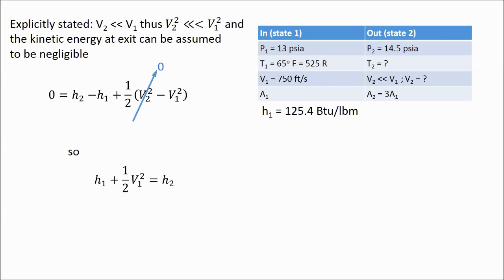That's because if v2 is less than v1, then v2 squared is definitely less than v1 squared. So our final energy balance equation ends up being that the enthalpy plus the kinetic energy at the entrance is equal to the enthalpy at the exit.